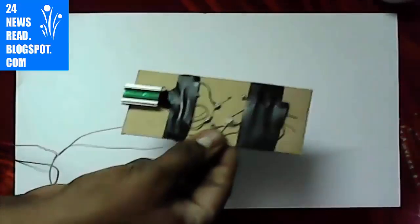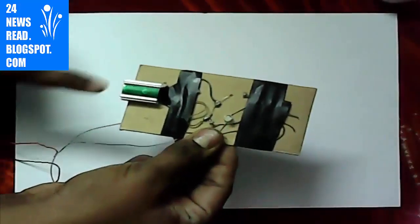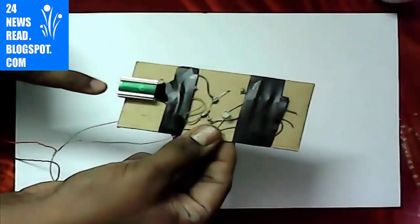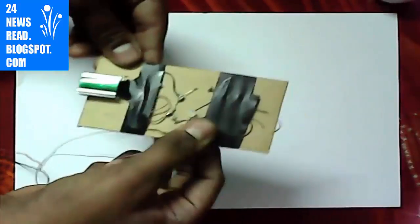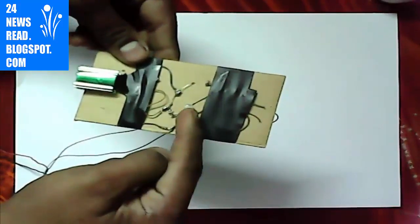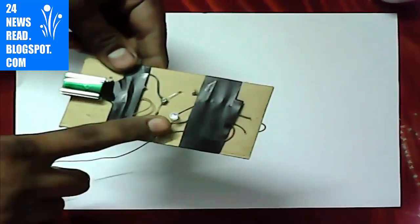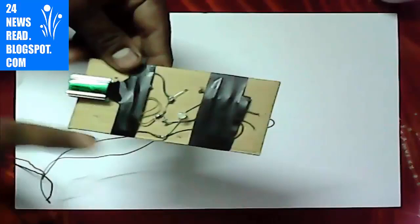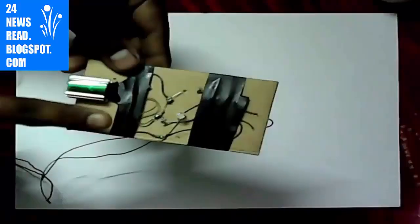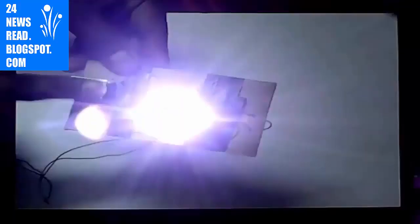See, this is a touch screen light. This is the sensor and this is the light. When I touch here, the light is on. See, I touch here and the light is on.